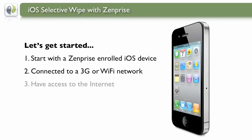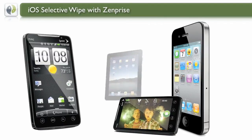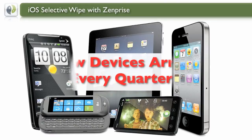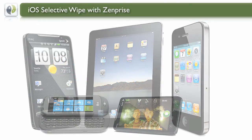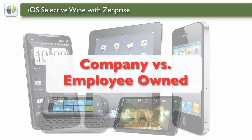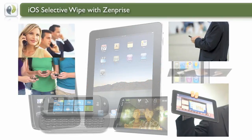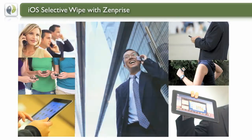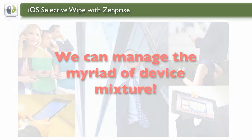Let's start with the ZenPrize-enrolled iOS device connected to a 3G or Wi-Fi network with internet access. Mobile devices are changing the way we do our work and interact with everyday life. New devices arrive every quarter. But the problem now arises: how do we manage company versus employee-owned devices? With one device being part of our personal and business lifestyle, it's more important for enterprises now to use ZenPrize to manage the myriad of device mixture.